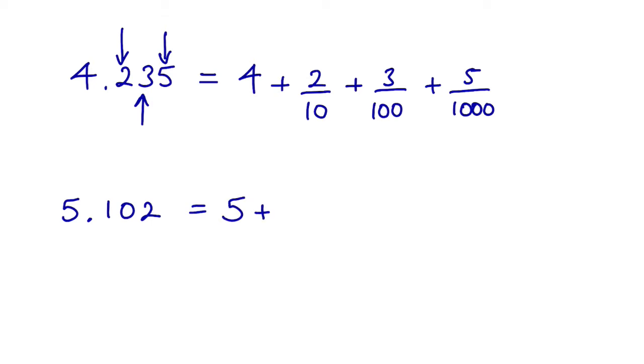Now in the hundredths position we don't have anything, but we do not write zero over a hundred. So the next digit we need to look at is this one here, which is 2 over 1000.